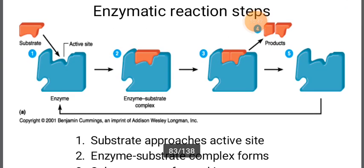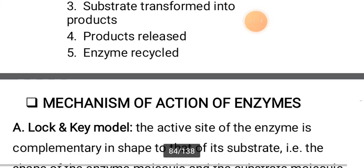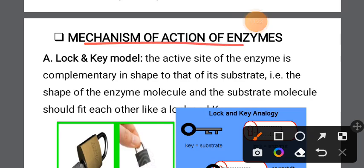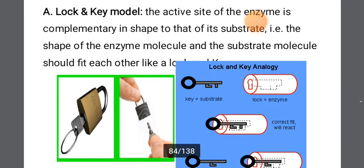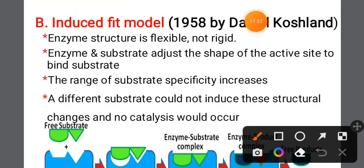The substrate approaches the active site and the enzyme-substrate complex forms. The substrate is transformed into a product, which is then released, and the enzyme is recycled. The active site of the enzyme is complementary in shape to the substrate — like a lock and key model. The active site of the enzyme is complementary to the shape of the substrate molecule, and they must fit each other.